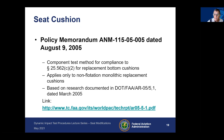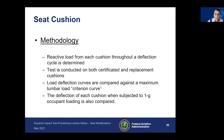Another way to conduct assessments when replacing a seat cushion is an FAA policy memorandum released in 2005 that describes a component test method for compliance to 25.562(c)(2) — the down test for injury — for replacement of seat bottom cushions. This applies only to non-flotation monolithic replacement cushions and was based on research and tests conducted for the FAA. The basic methodology measures a reaction load from each cushion throughout a deflection cycle. The test is conducted on both the originally certified cushion and the proposed replacement cushion material.